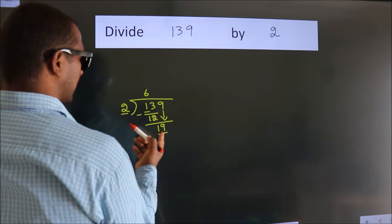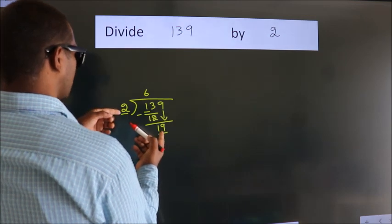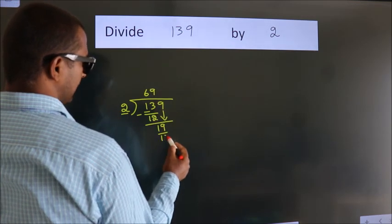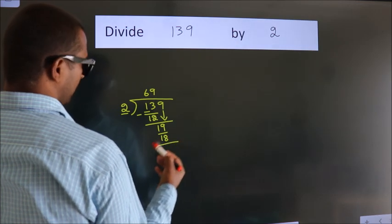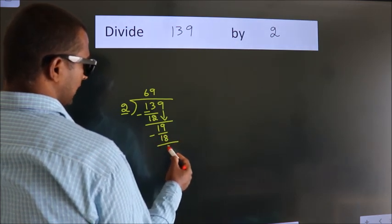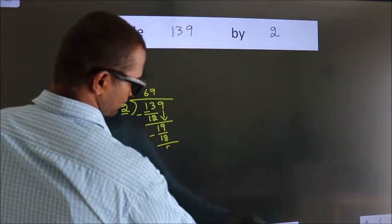A number close to 19 in 2 table is 2 9's, 18. Now we subtract. We get 1.